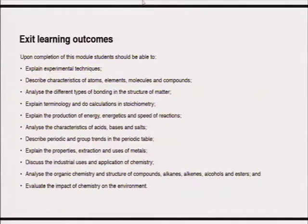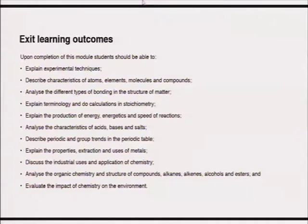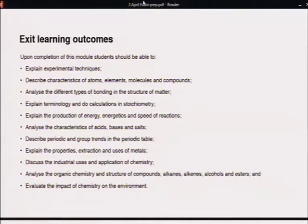The first outcome is that you should be able to explain experimental techniques and describe the characteristics of atoms, elements, molecules and compounds. In addition, you must be able to analyze the different types of bonding in the structure of matter, explain terminologies, and do calculations based on different chemical reactions. When you write your exams you will be provided with a periodic table, which is one of the essential tools needed to answer questions, especially for chemical reactions and calculating relative formula mass.